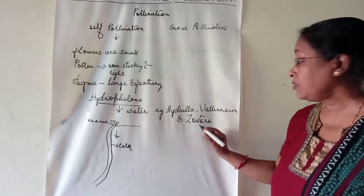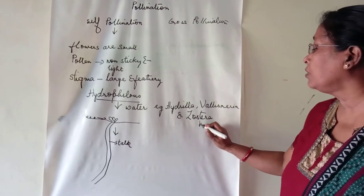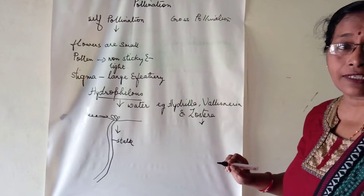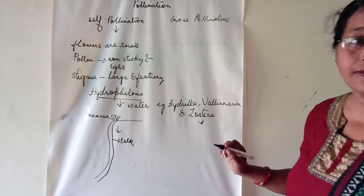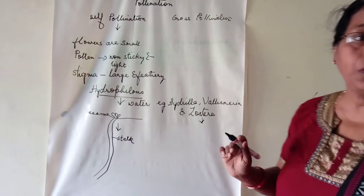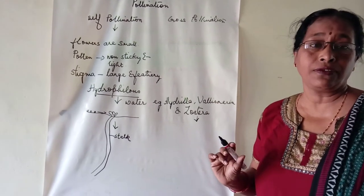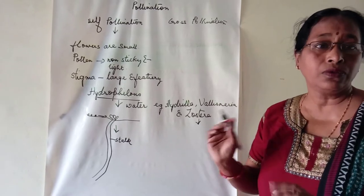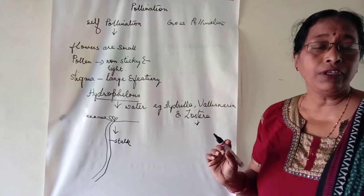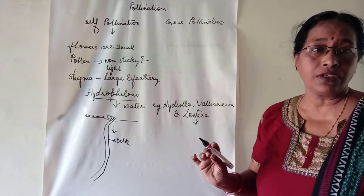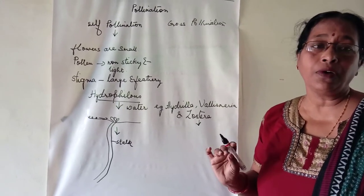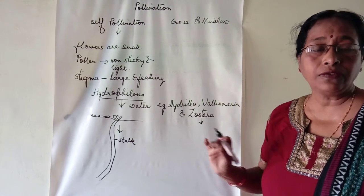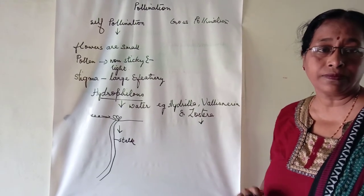In Zostera, or the seagrass or eelgrass, the pollen grains have a wing-like structure. They swim to the female part of the flower — that is, the stigma — and pollination takes place. This is a submerged plant.